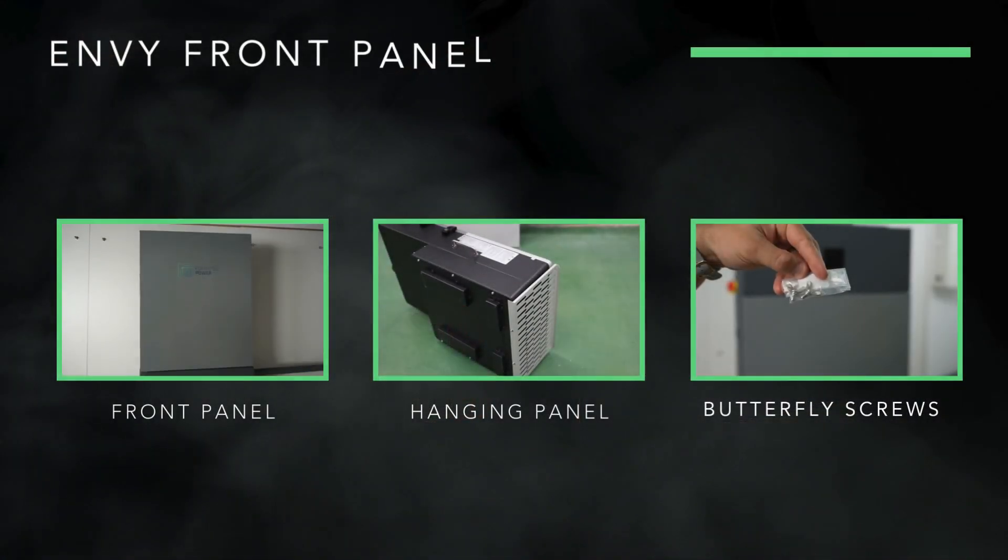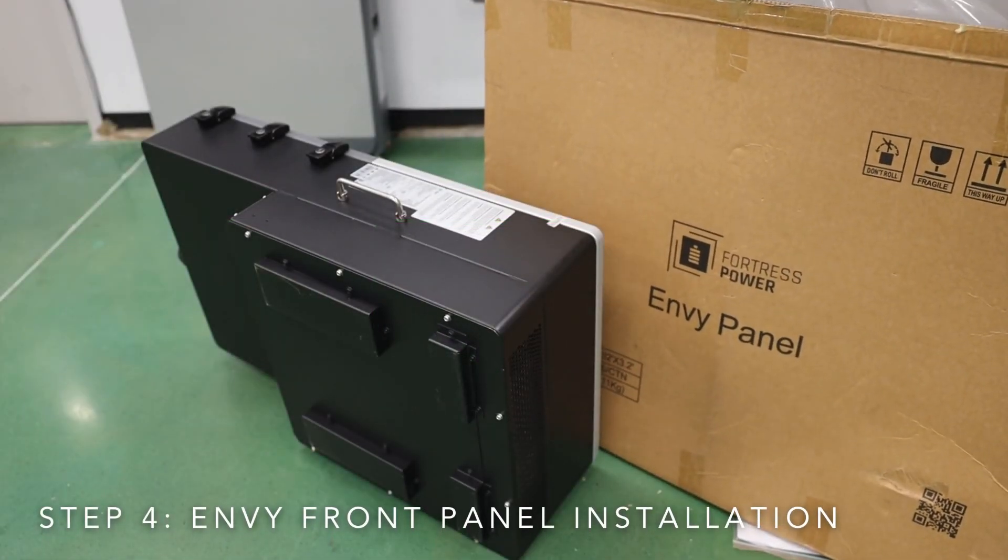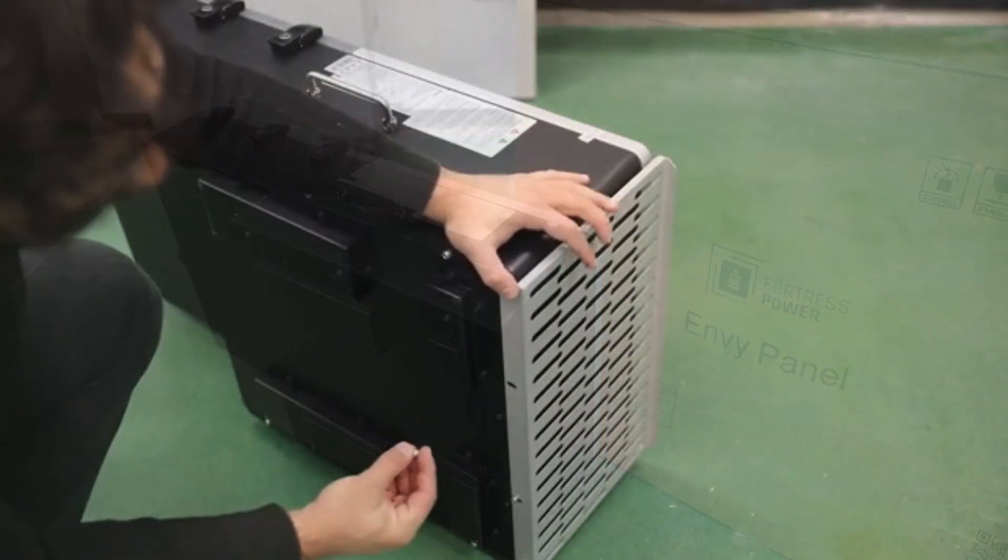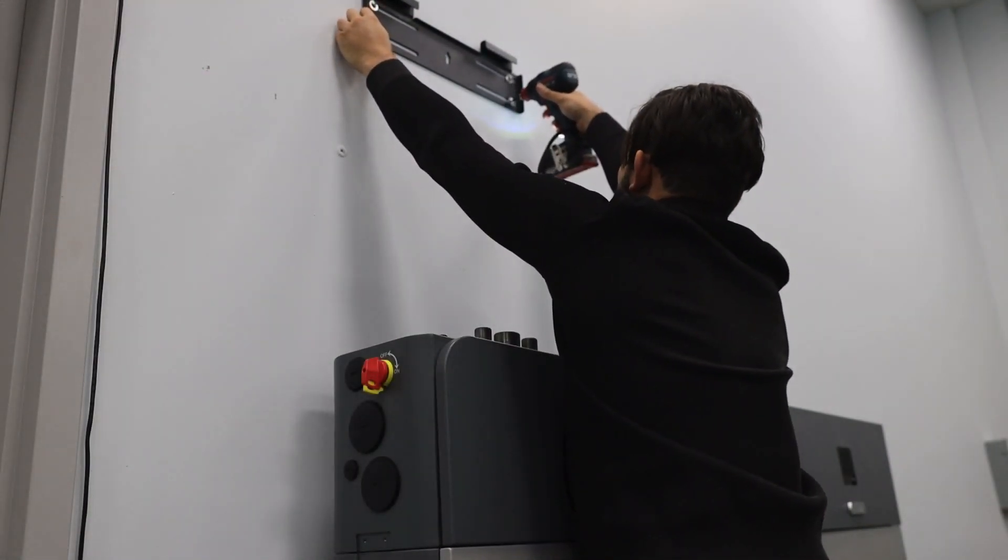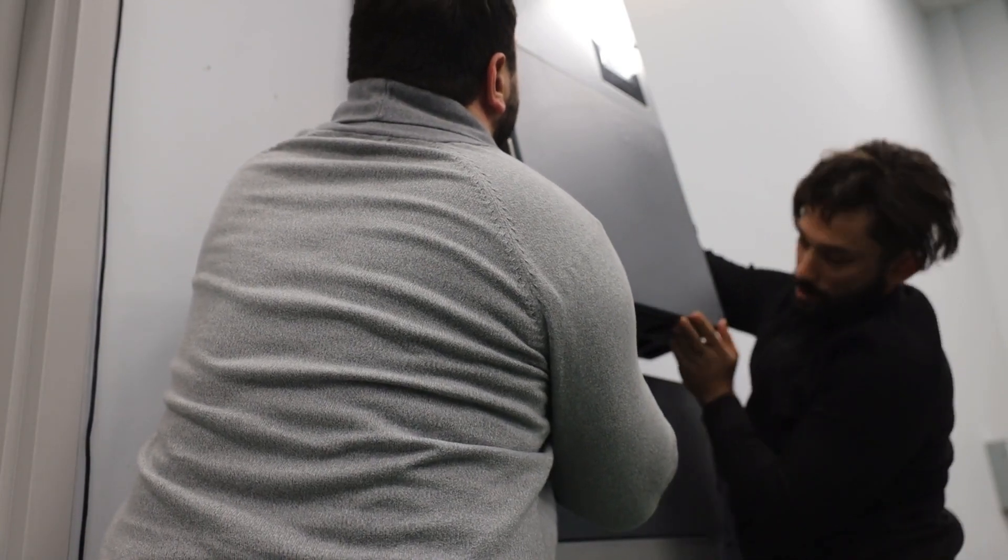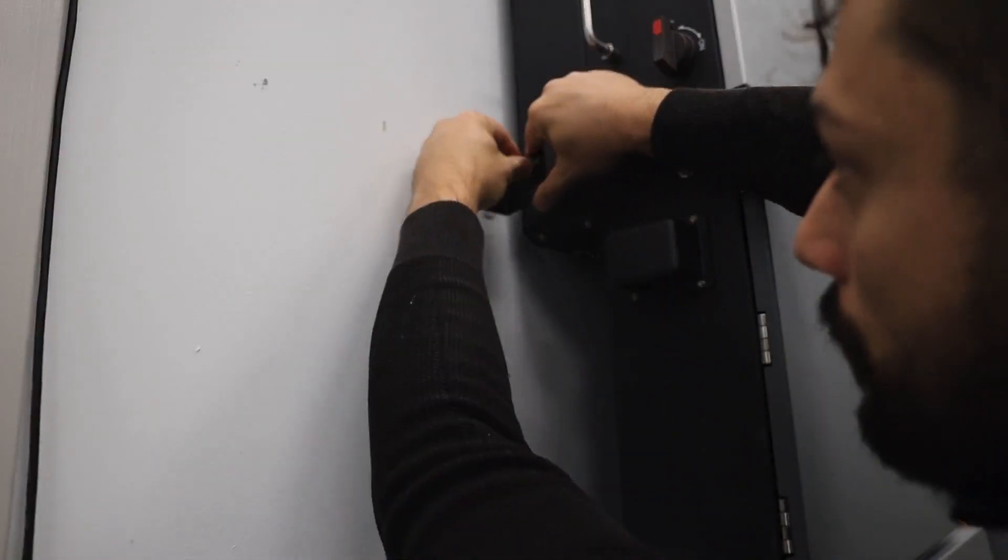If you want to install the optional Envy front panel, proceed in installing the included bracket into the back of the inverter before mounting it on top of the E-Way. Once you have secured the Envy bracket into the wall, hang the Envy, letting it sit on top of the E-Way. Secure the sides to the wall.